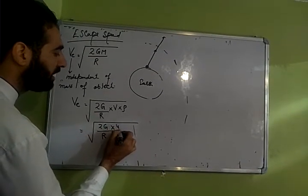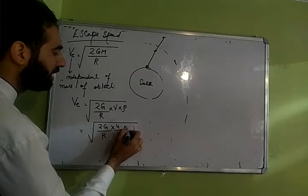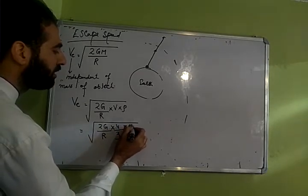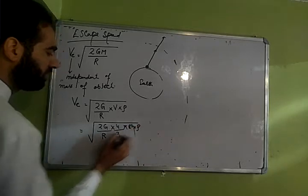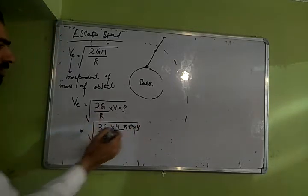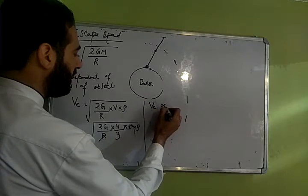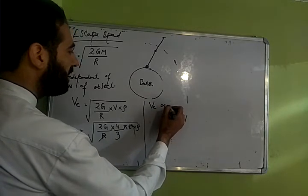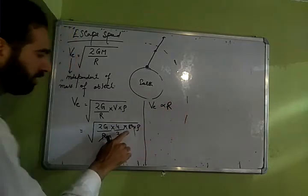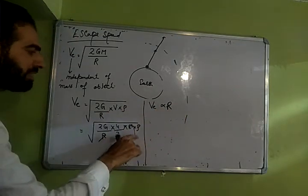Volume of sphere will be 4 by 3 pi r cube into rho. This r and this will cancel so that means escape speed or radius me, yahan kya relation nikli, directly proportional to r kyunki r square ka root ho gaya r.